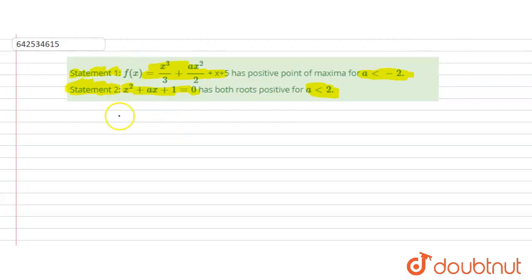We have f(x) = x³/3 + ax²/2 + x + 5. Now we will differentiate this.